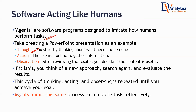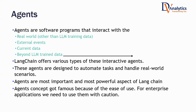AI agents think, take an action, and then observe something — thought, followed by action, followed by observation. An AI agent repeats this cycle of thinking, acting, and observing until you achieve your goal. AI agents mimic the same process to complete tasks effectively. They are software programs that interact with the real world beyond the LLM training data, having access to external events and current data.